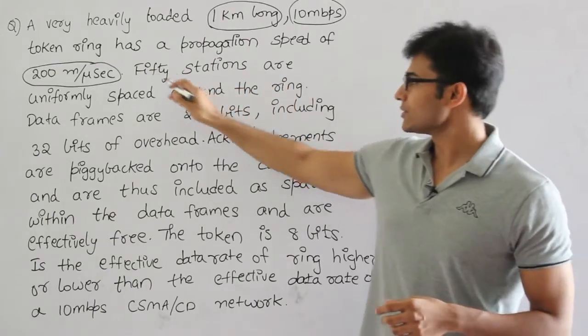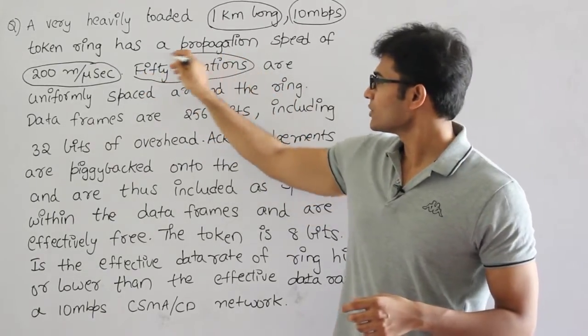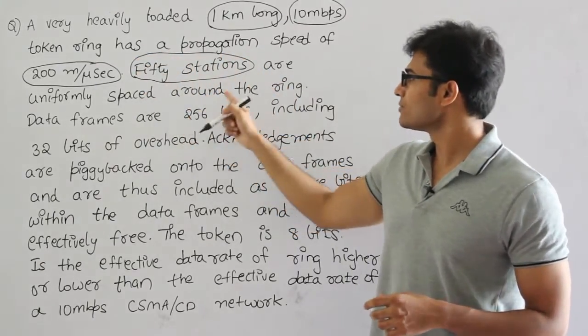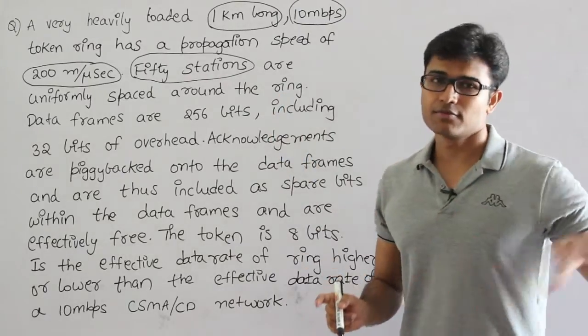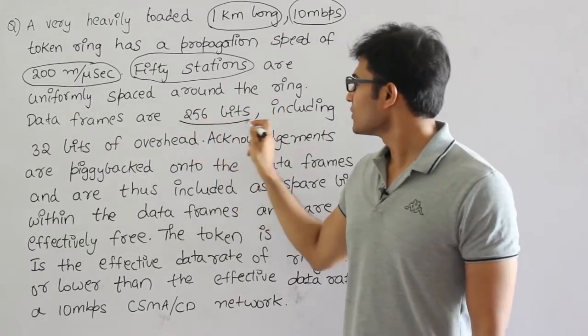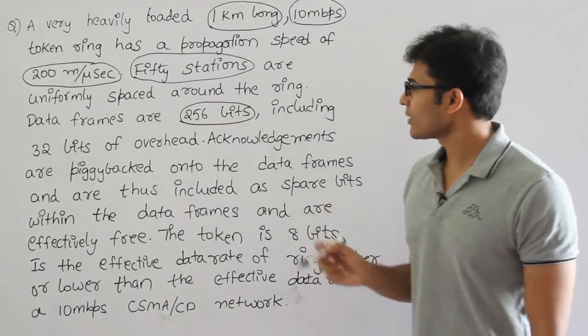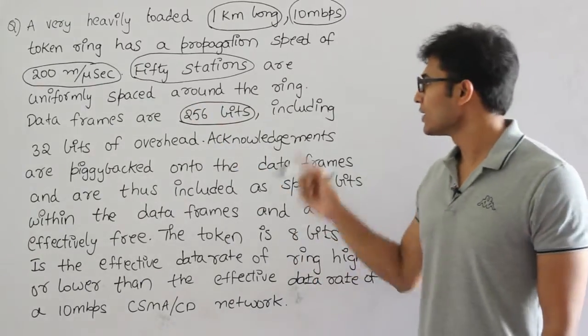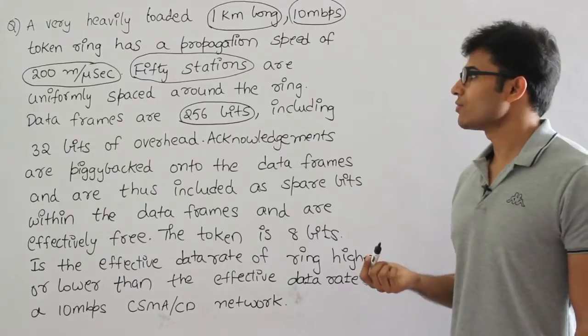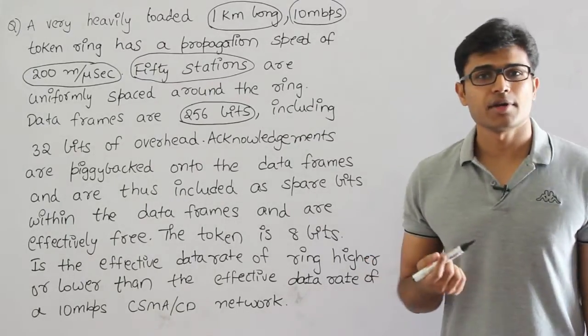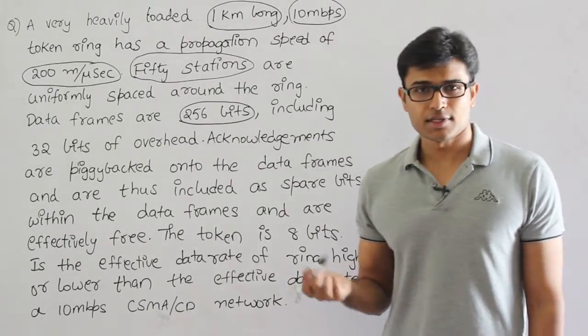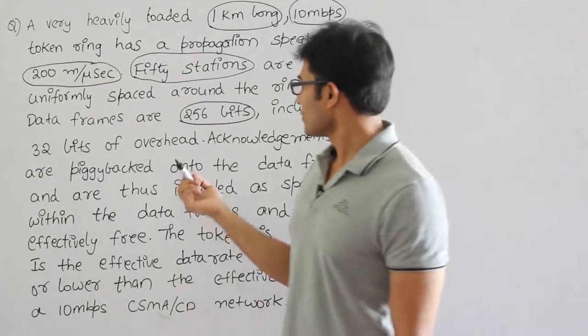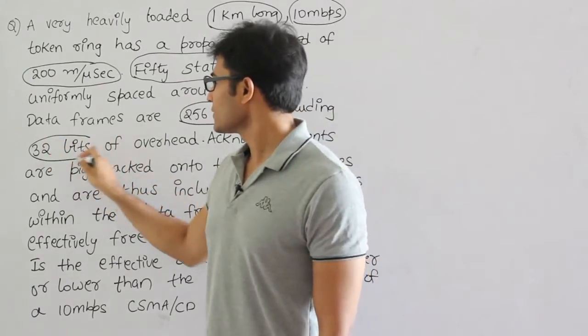Fifty stations are uniformly spaced around the ring. Data frames are 256 bytes, which means the length of the packet is 256 bytes, including 32 bytes of overhead. So the overhead present is 32 bytes, which is the header. Sorry, 32 bits. So header size is 32 bits.